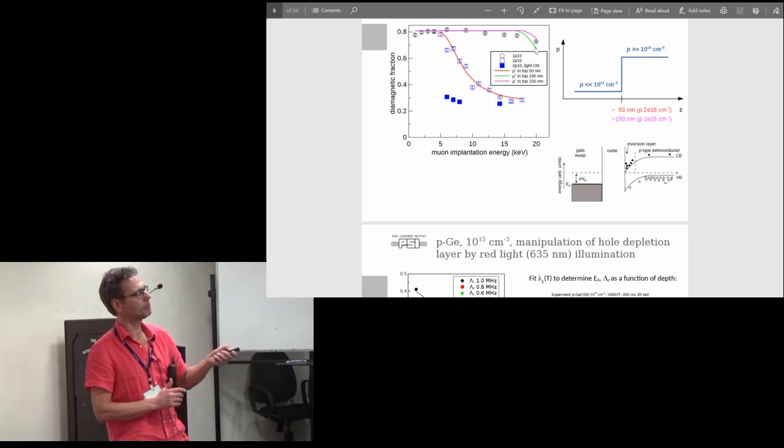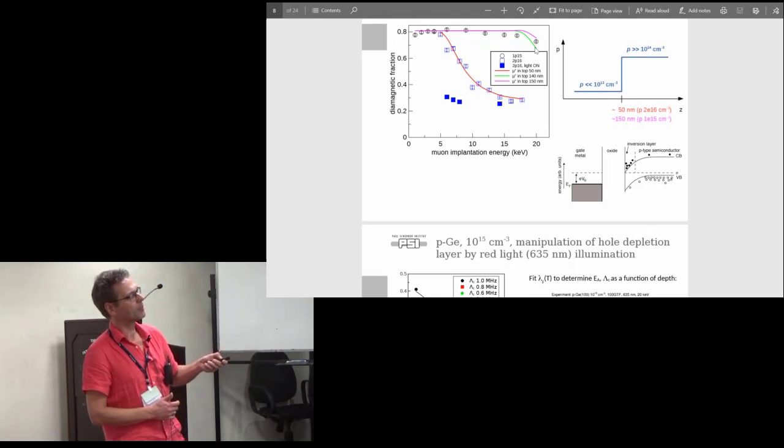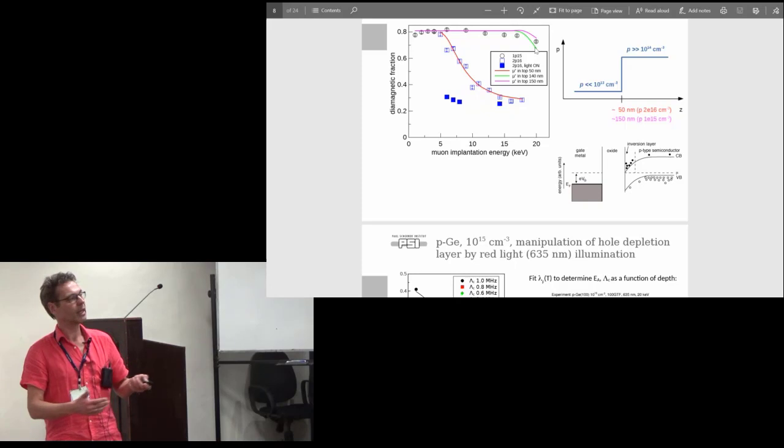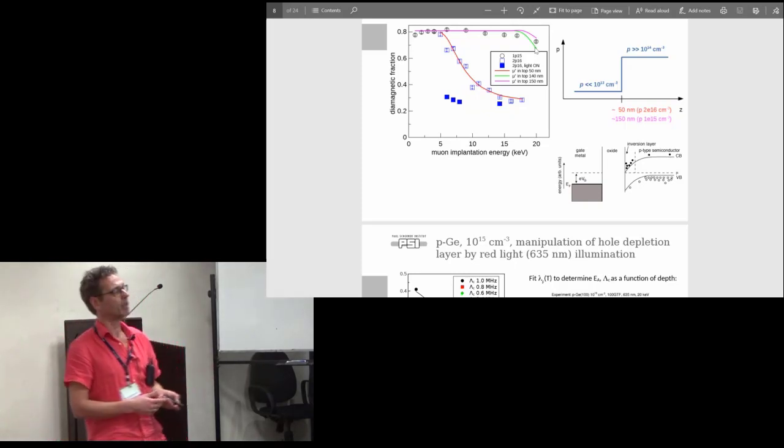Here again is an energy scan of the sample which was at 1 times 10 to the 15th per cubic centimeter holes. Only at the depth of around 20 keV, which corresponds to 150 nanometers, these are curves that assume no holes up to 150 nanometers and then immediately the presence of holes. We have a relatively sharp transition from no holes to having all holes. The depletion region is sharply defined, and this can be even better seen in this sample with a higher doping level. For the higher doping level this is about 50 nanometer depth, and for the 10 times lower doping level the width of the depletion layer is about three times larger. This is what you expect: the width of the depletion layer scales with the square root of your bulk doping level.